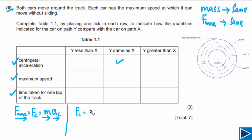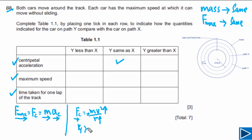To compare maximum speed, we use F_c = mv²/R. Since F_c and m are the same, if R is bigger then V must be bigger. Since R_Y > R_X, it follows that V_Y > V_X — the maximum speed of Y is greater than that of X.